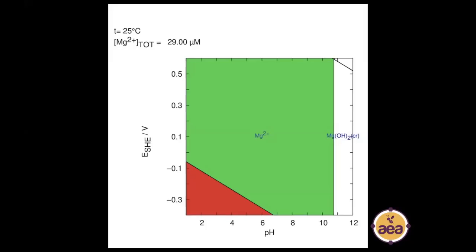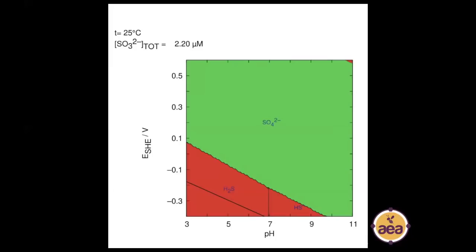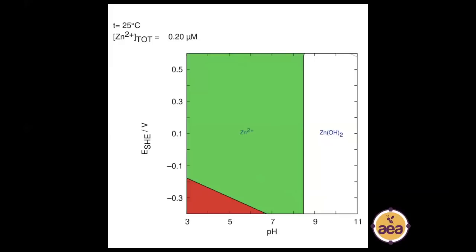Most of the nutrients we think about regarding availability would be phosphorus or trace minerals. Here is what sulfur looks like at typical concentrations — about 35 ppm. We have sulfate, and then the hydrogen sulfide forms show up on the lower left side of the chart in extremely reduced environments — like anaerobic fermentation in a liquid manure pit — which produces hydrogen sulfide, that rotten egg smell.